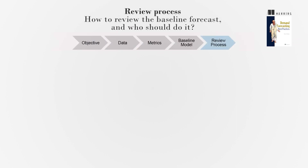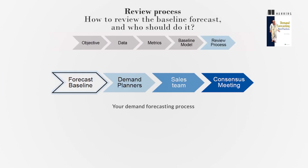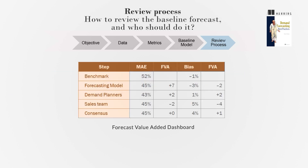After generating the baseline forecast, teams review and suggest improvements using the Forecast Value Added (FVA) framework. This framework tracks each team's modifications and measures their impact on the forecast, helping to avoid inefficiencies and influence wars, as discussed in Chapter 16.